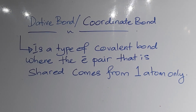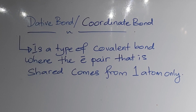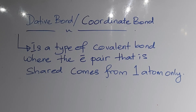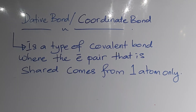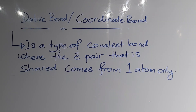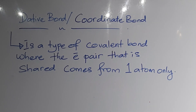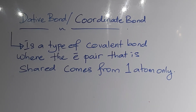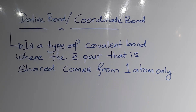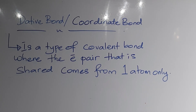Good morning students. Today we're going to learn about dative bond, also known as coordinate bond. A dative bond is a kind of covalent bond where the electron pair that is shared comes from only one atom. In a regular covalent bond, both atoms contribute an equal number of electrons for sharing, but for a dative bond, the sharing of electrons comes from only one atom, which has the lone pair.